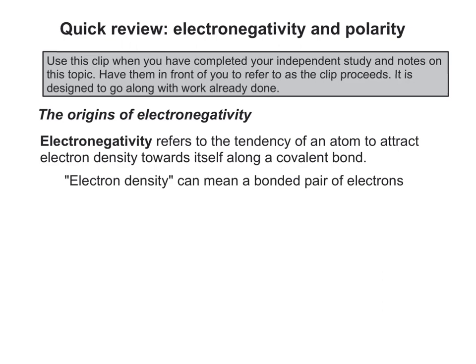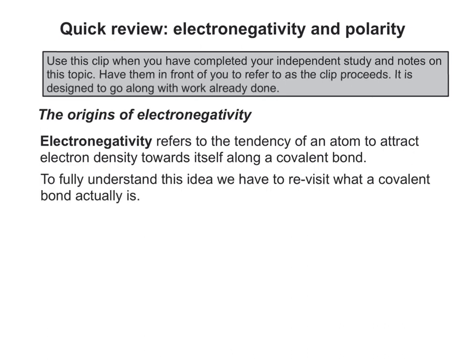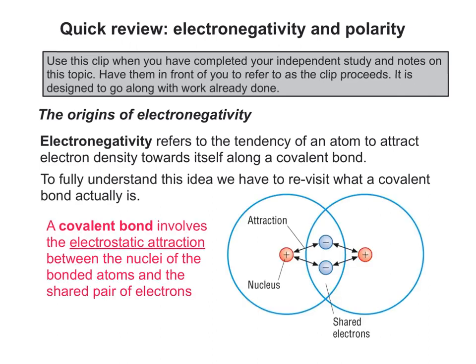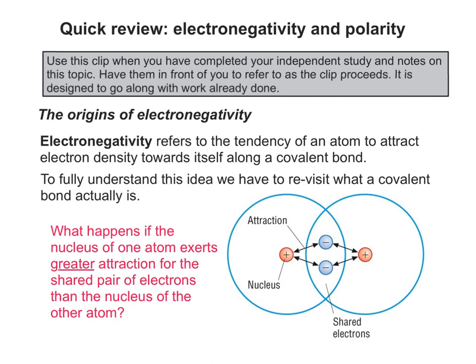Electronegativity refers to the tendency or ability of an atom to attract or pull electrons, or electron density, towards itself along a covalent bond. To fully understand this idea, we have to go back to what a covalent bond actually is. A covalent bond involves the electrostatic attraction between the nuclei of the bonded atoms and the shared pair of electrons. What happens if the nucleus of one atom exerts greater attraction for the electrons than the nucleus of the other atom?